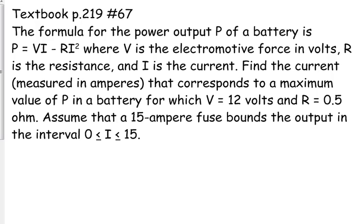We want to find the current, measured in amperes, that corresponds to a maximum value of P in a battery for which V equals 12 volts and R is half an ohm. Assume that a 15-ampere fuse bounds the output in the interval between 0 and 15. So the current can only be between 0 and 15—those are the endpoints of our interval.